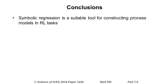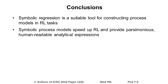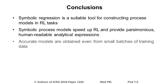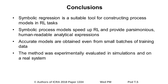The experiments show that symbolic regression finds accurate process models that can be employed in performing controlled tasks in reinforcement learning. Symbolic process models speed up reinforcement learning and provide parsimonious analytical expressions, well interpretable by humans. A big advantage of symbolic regression is that accurate models can be found even using small batches of training data. The method was experimentally evaluated both in simulations and on a real system.